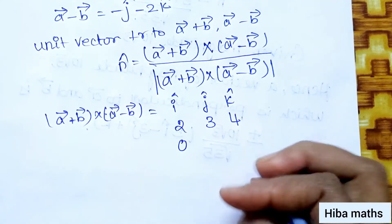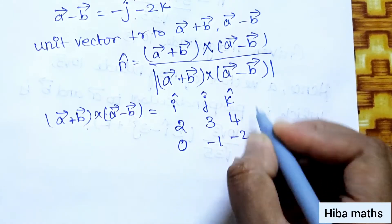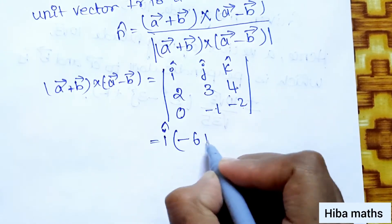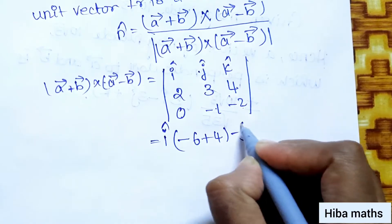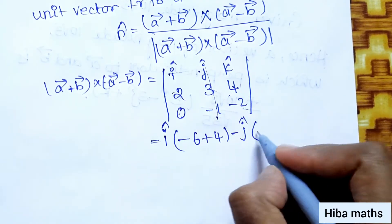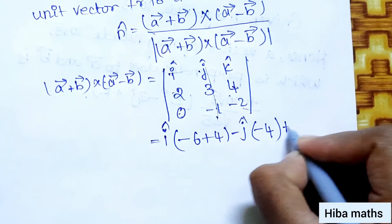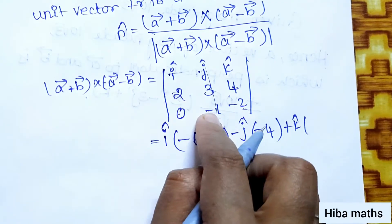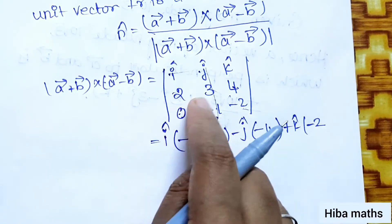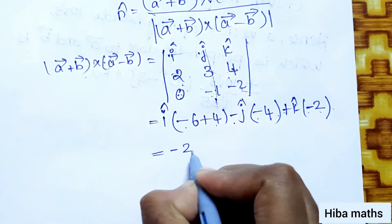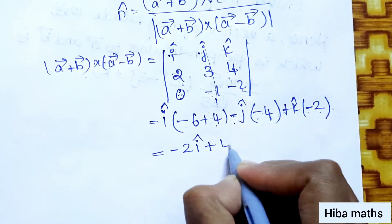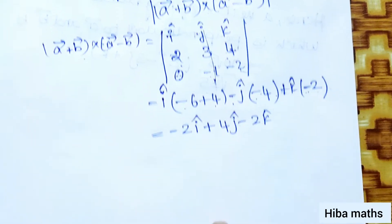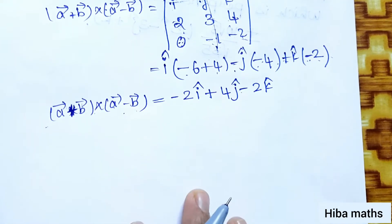Expanding: i times (-6+4) minus j times (0-4) plus k times (0-(-2) minus (-2) times 0). This gives i(-2) minus j(-4) plus k(-2), so the cross product equals -2i plus 4j minus 2k.